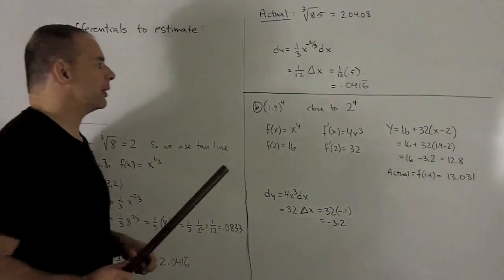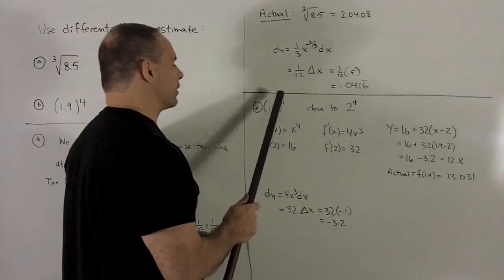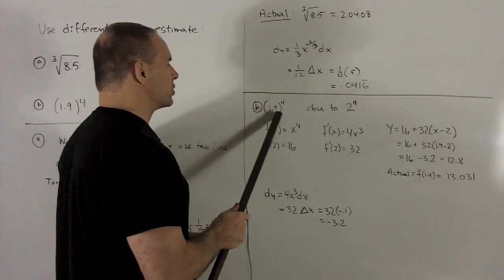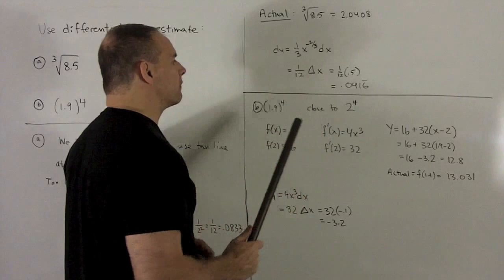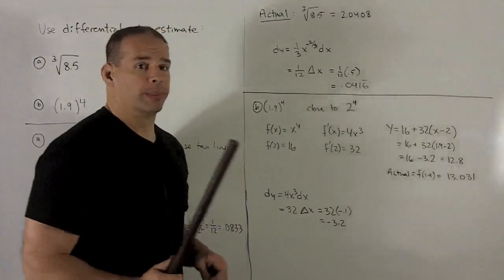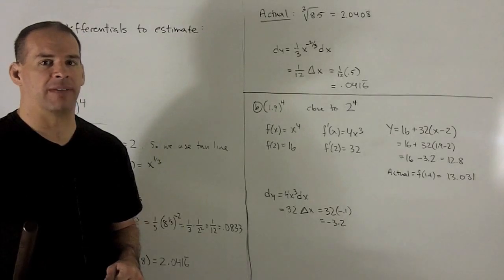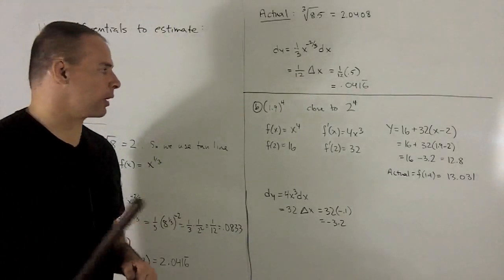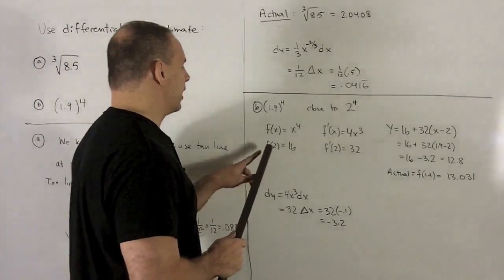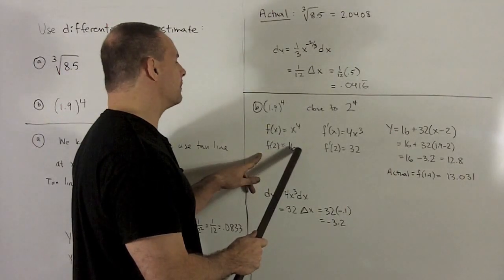Let's look at the second one. We have 1.9 raised to the fourth power. Note that this is close to being 2 raised to the fourth power. So the point we're going to use is x equal to 2. Our function is going to be f(x) equal to x to the fourth.